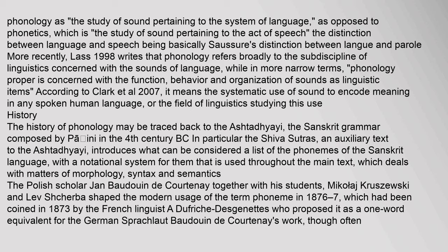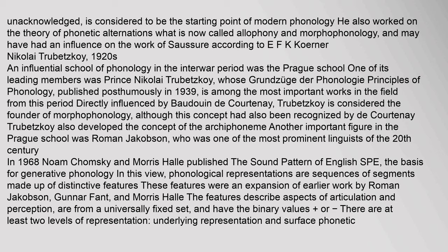The term phoneme had been coined in 1873 by the French linguist A. Dufriche-Desgenettes, who proposed it as a one-word equivalent for the German 'Sprachlaut'. Baudouin de Courtenay's work, though often unacknowledged, is considered to be the starting point of modern phonology. He also worked on the theory of phonetic alternations — now called allophony and morphophonology — and may have had an influence on the work of Saussure, according to E. F. K. Koerner.